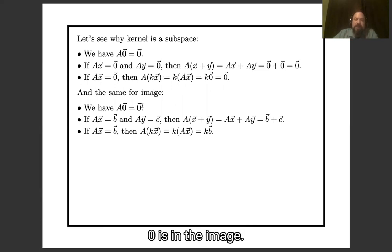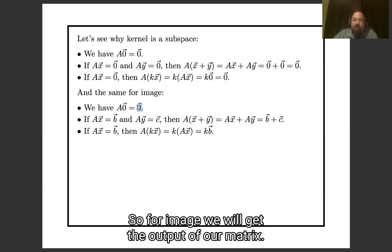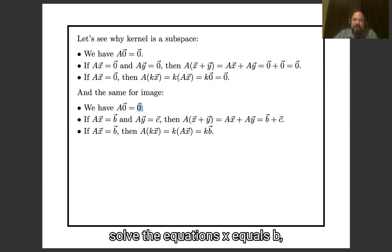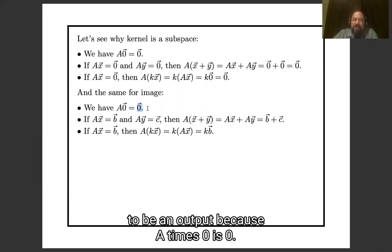Zero is in the image, so for image we're looking at the output of our matrix, we're looking and seeing whether we can solve the equations Ax equals b. We can get zero to be an output, because A times zero is zero.